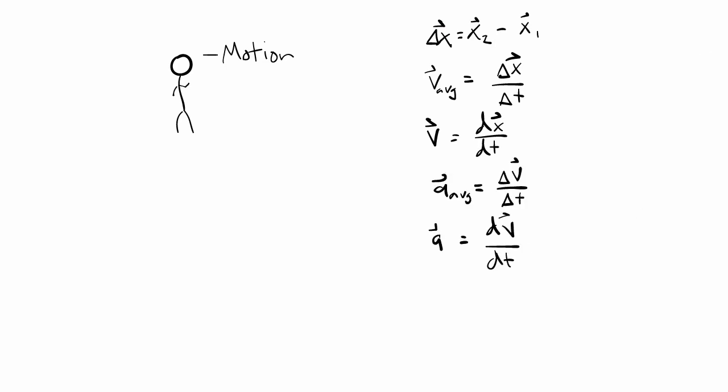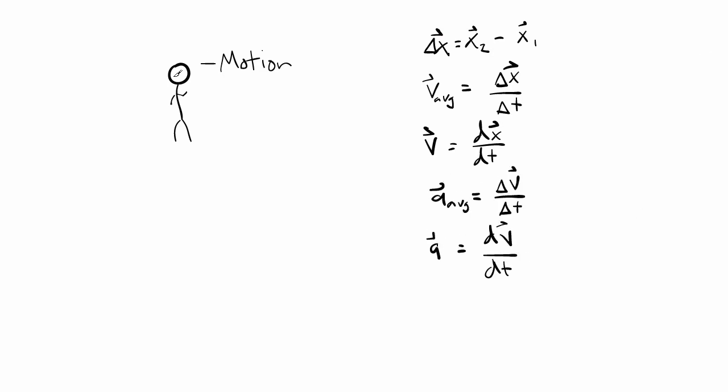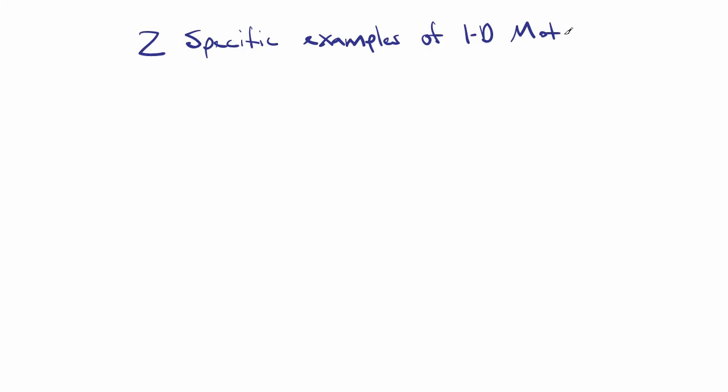We know how to relate the basic quantities that can be used to describe the motion of an object: displacement, velocity, and acceleration. These equations apply no matter what kind of motion is taking place. However, certain types of motion are very common and worthwhile to explore in more detail. So let's talk about two of these: motion involving constant velocity and constant acceleration.